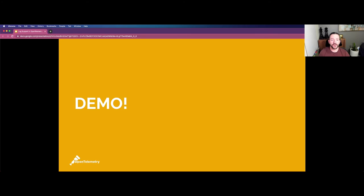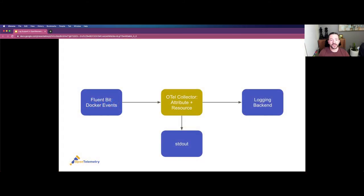I'd like to turn over to a quick demo to show you how you can get started with the collection aspect in OpenTelemetry. At a high level, we'll have an OpenTelemetry collector configured to receive Fluent Forward data. I will deploy FluentBit configured to collect Docker events and send it to the OpenTelemetry collector. The collector will send that data to two different destinations — a logging backend and standard out — and will also be configured to add attribute and resource information, enriching the FluentBit Docker events passing through.